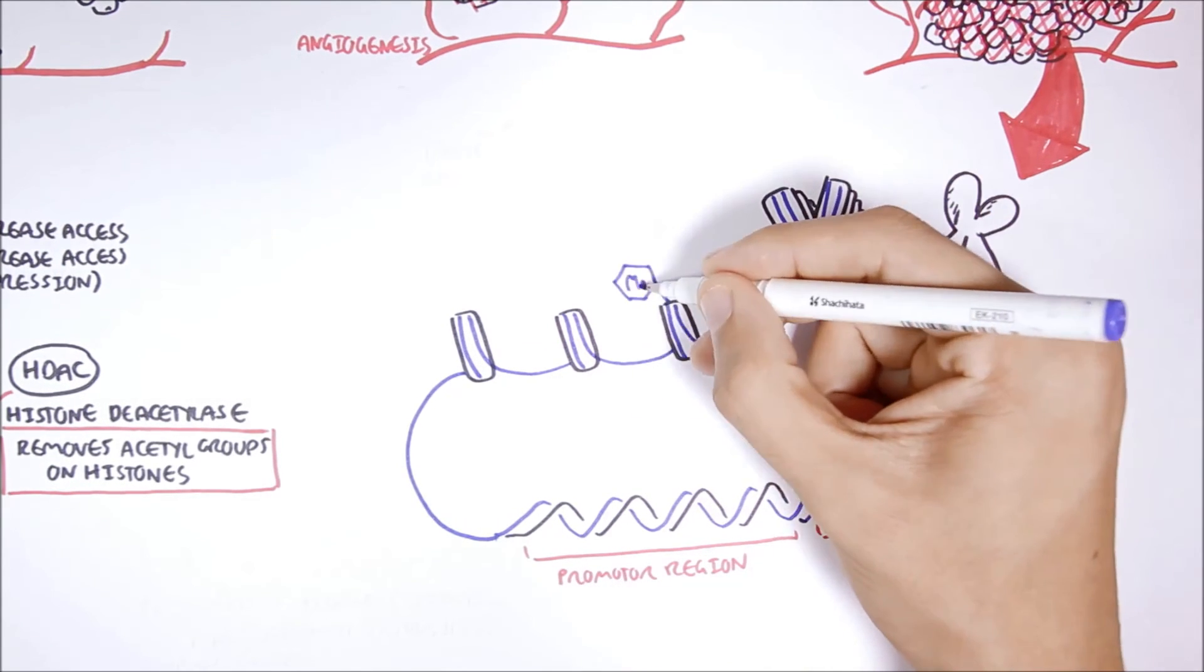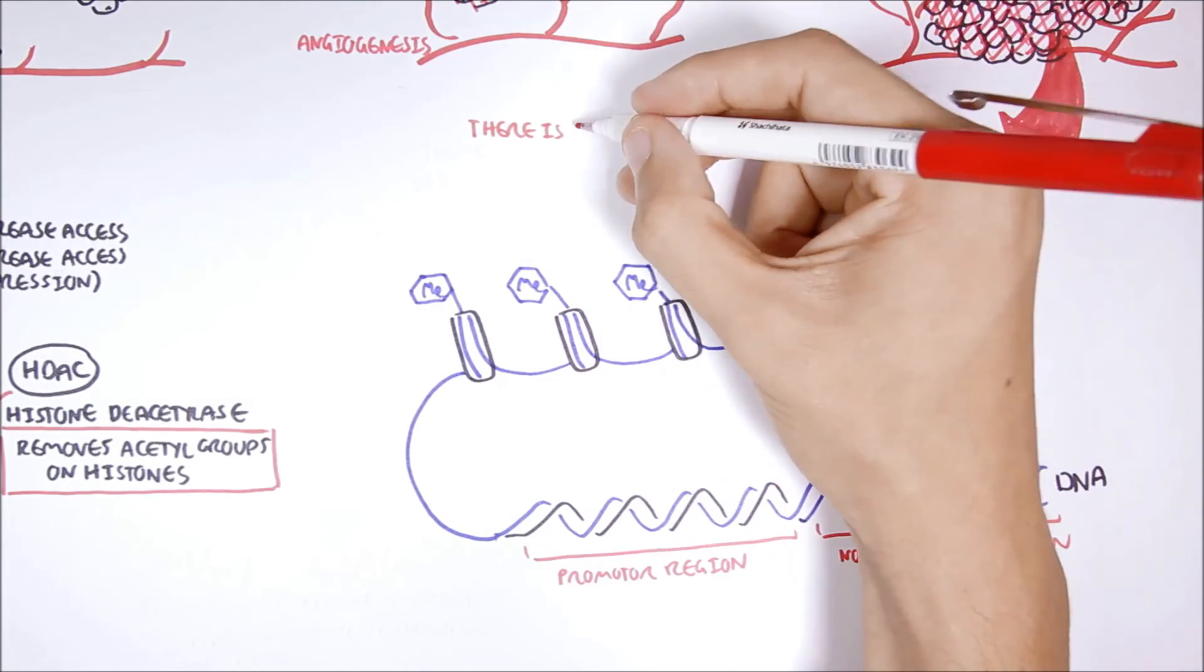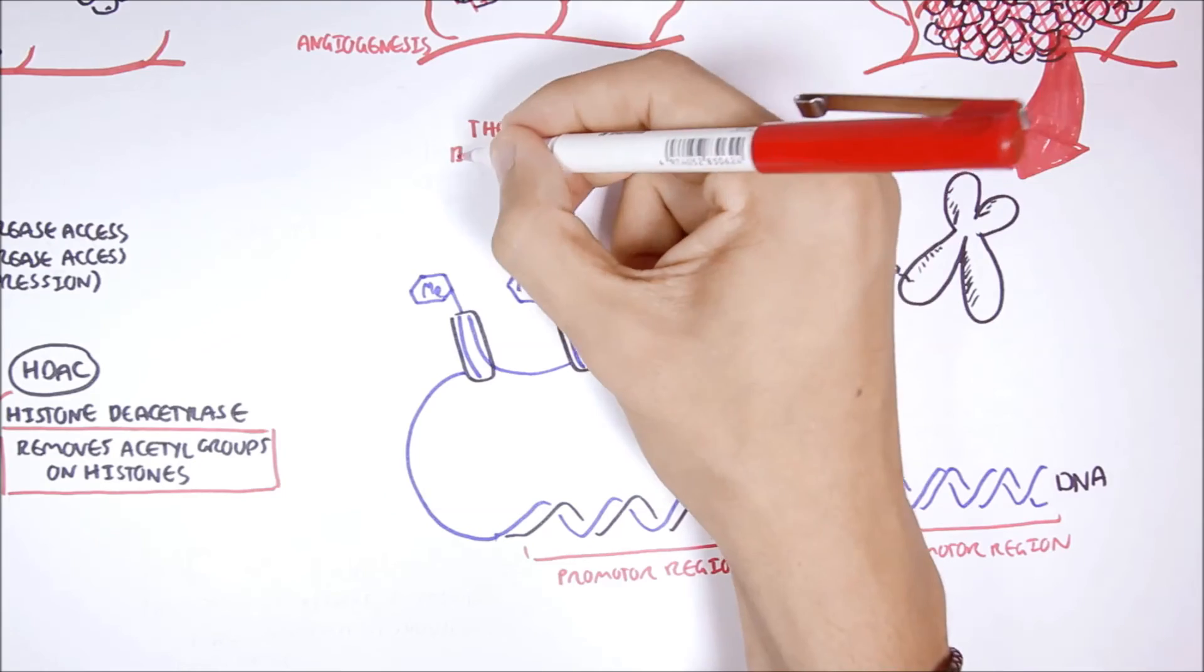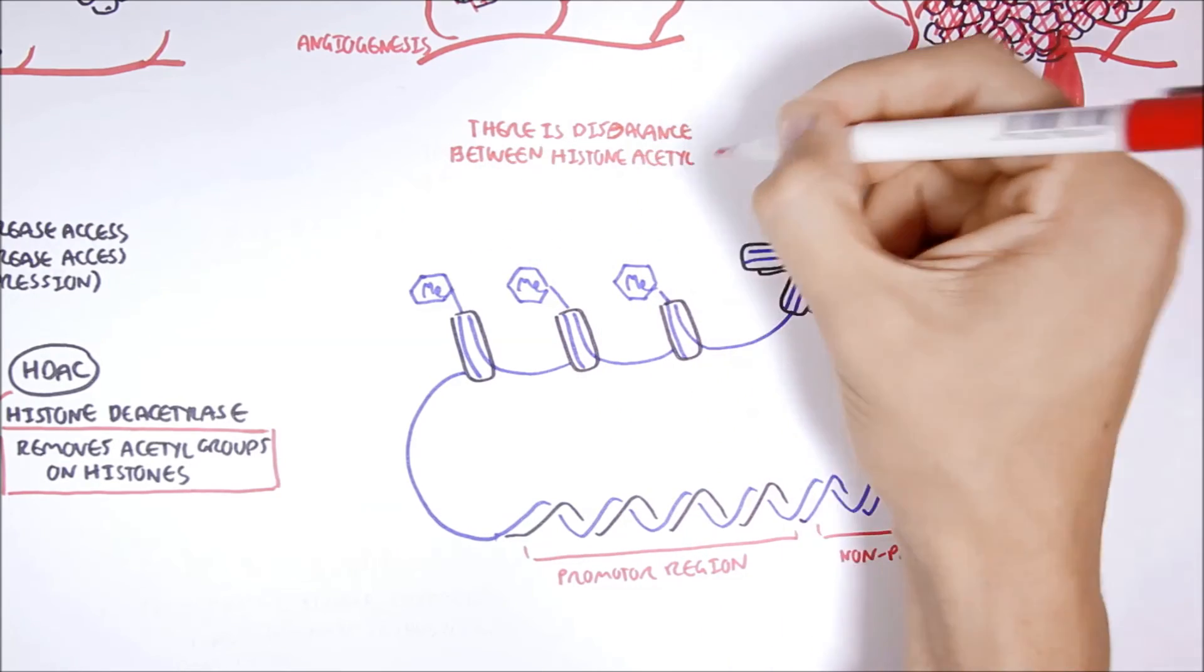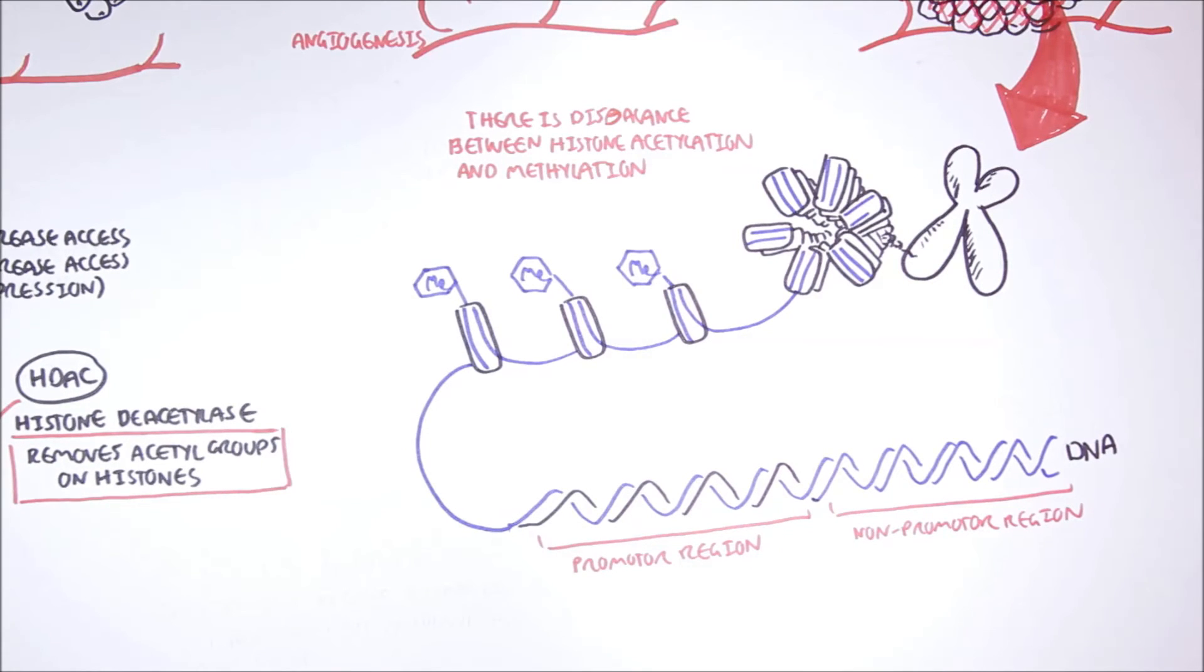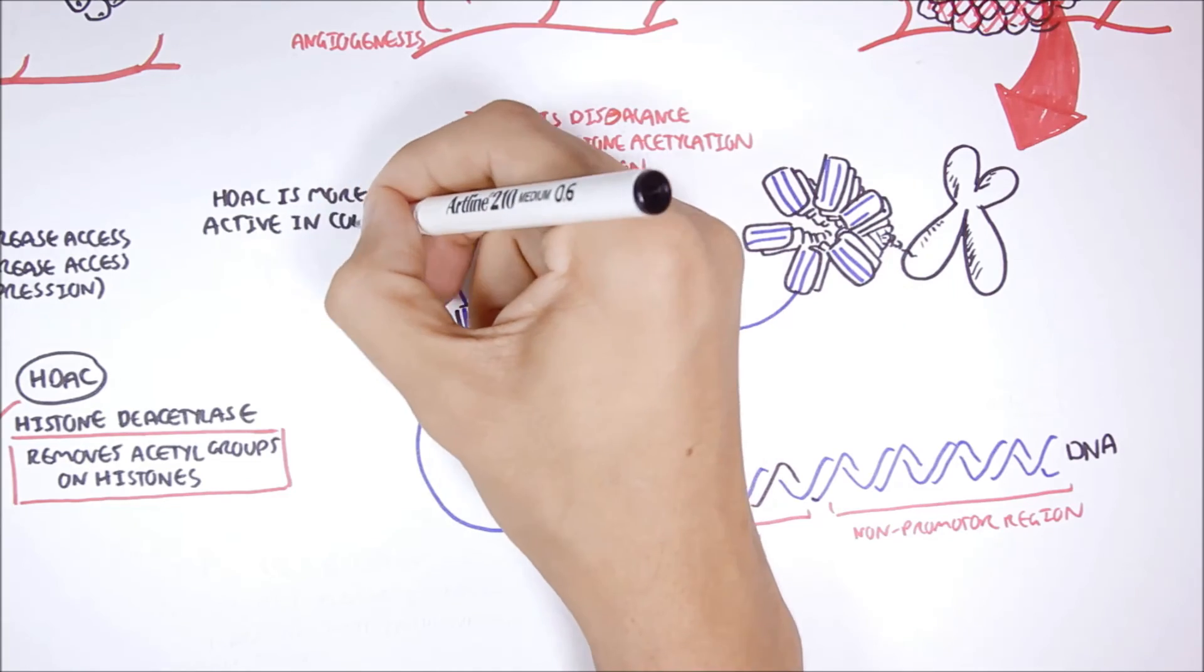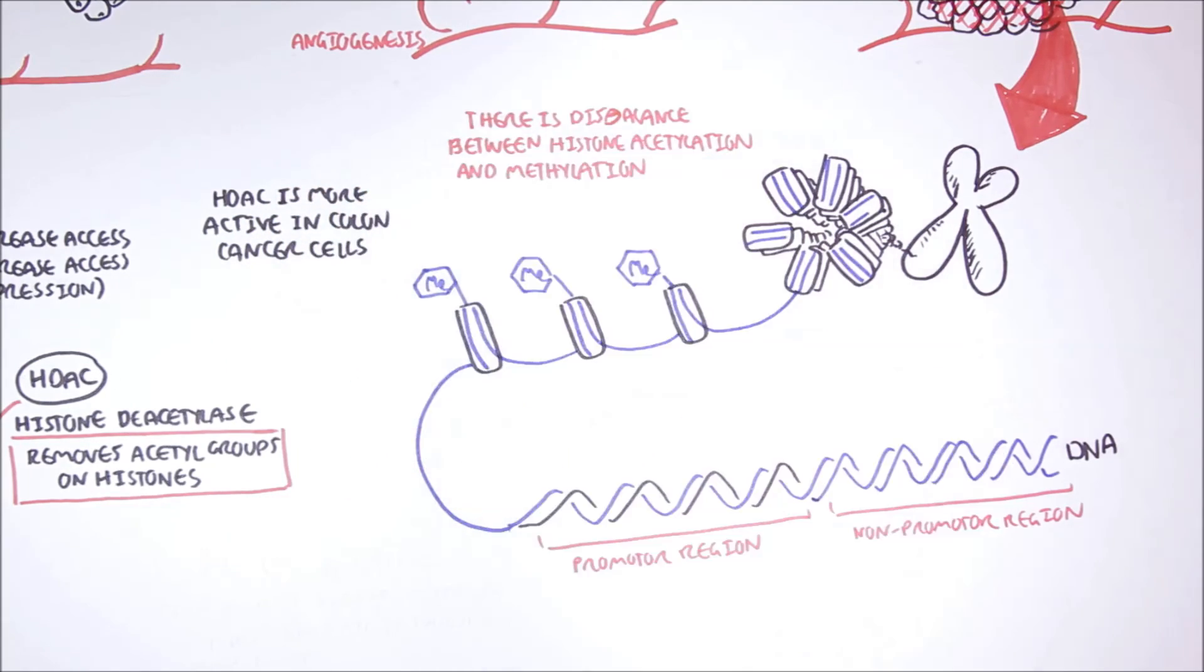In cancer cells, there is a disbalance between histone acetylation and histone methylation. So, we see more methylated histones. Remember, methylation decreases access to transcription factors. One reason why we see more methylation is because of HDAC, the enzyme, which appear to be more active in colon cancer cells.